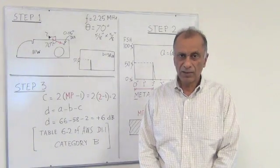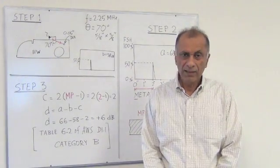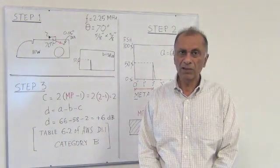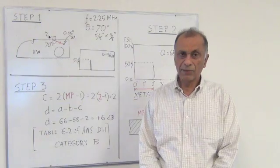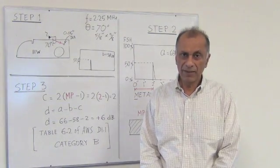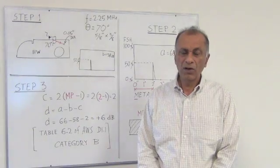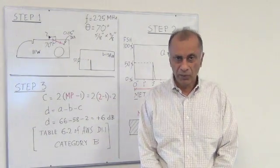Now we have to figure out the refracted angle of the probe. The refracted angle to be used depends on the thickness of the steel to be inspected, and that is given in table 6.2 of AWS D1.1.